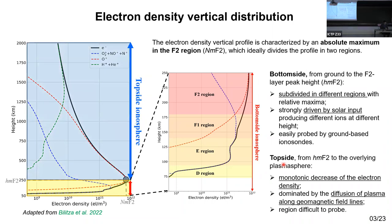The top side is the region from the F2 layer peak — HmF2 — to the overlying plasmasphere. It is characterized by a monotonic decrease of electron density, and compared to the bottom side it is dominated by the diffusion of plasma along the geomagnetic field lines, while in the bottom side the production of ions is the principal process. The top side is also a region difficult to probe because it cannot be sounded by ground-based ionosondes; we have to use more expensive and sophisticated instruments such as satellite instrumentation or incoherent scatter radars from the ground.